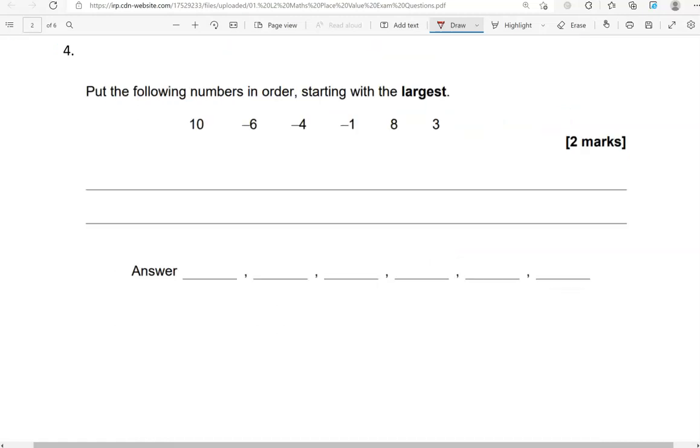Put the following numbers in order, starting with the largest. So we've got 10, negative 6, negative 4, negative 1, 8, and 3. Again, I'm going to use a number line or thermometer.